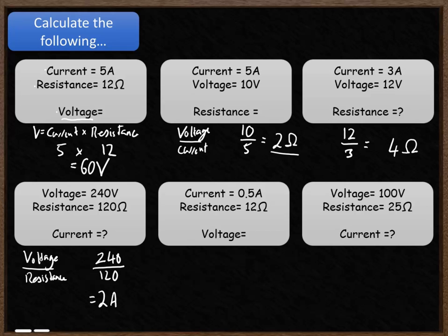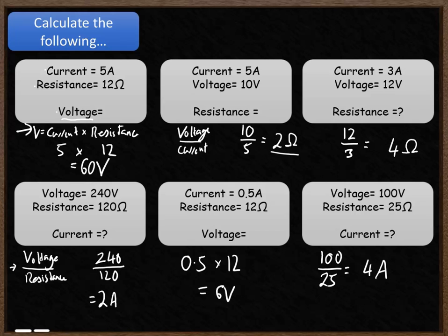This question asks you to calculate voltage — voltage is current times resistance: 0.5 amps multiplied by 12 ohms gives a voltage of 6 volts. The final one asks you to work out current — that's voltage divided by resistance: 100 volts divided by 25 ohms gives a current of 4 amps.